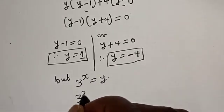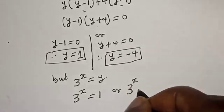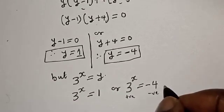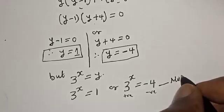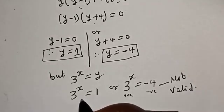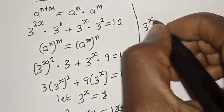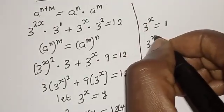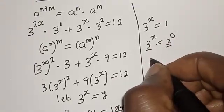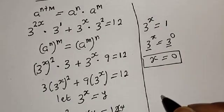Since 3 raised to power s equals y, we have 3 raised to power s equals 1, or 3 raised to power s equals minus 4. But 3 raised to any power is positive, so minus 4 is not valid. The only true solution is 3 raised to power s equals 1, which is the same as 3 raised to power 0. Therefore s equals 0.